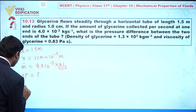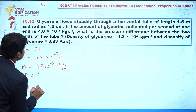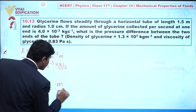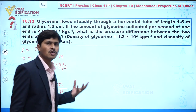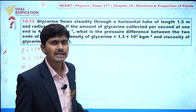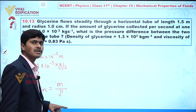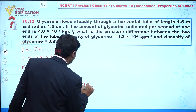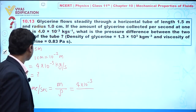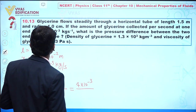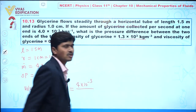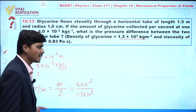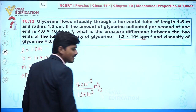Yes, we can calculate the volume flow rate — the volume of glycerin flowing per second. This is given by mass flow rate divided by density, because volume equals mass divided by density. So volume flow rate Q equals ṁ divided by ρ. The value of ṁ is 4 into 10 to the power minus 3, divided by density 1.3 into 10 to the power 3, giving us a result in meter cube per second.